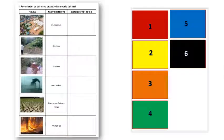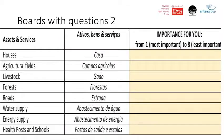For question one we have: floods, landslides, erosion, extreme winds, drought hazard, and uncontrolled fires — six items to rank. For question two, the person will also be asked to rank different assets and services. Unlike the previous question with six items, here we have eight, so you're going to use the eight cards.